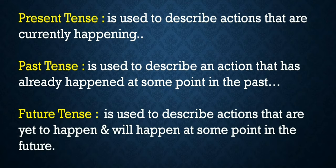Future tense is used to describe actions that are yet to happen and will happen at some point in the future. For example, the action could happen tomorrow, next week, two years later, etc.